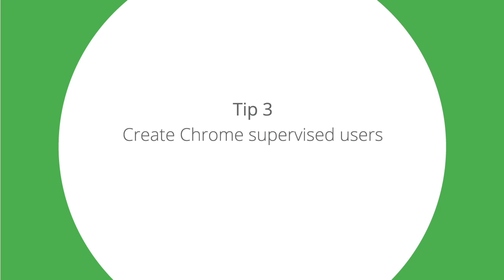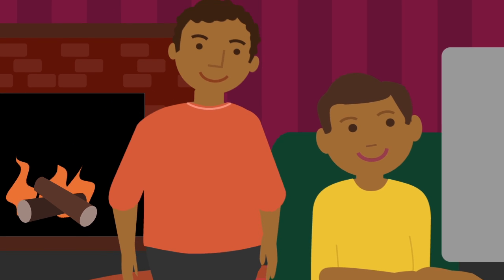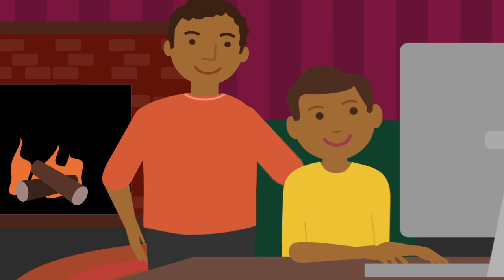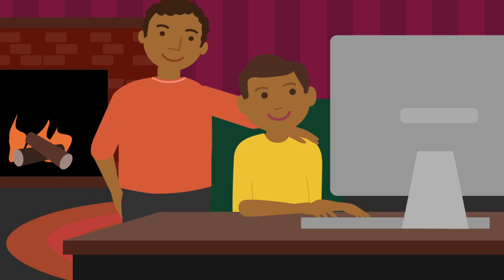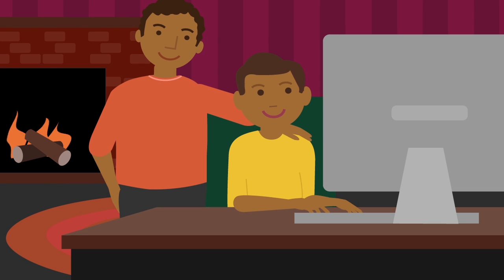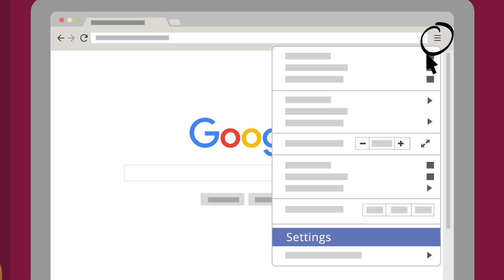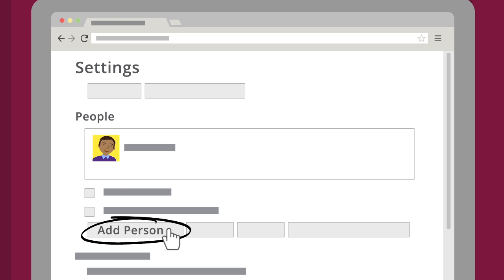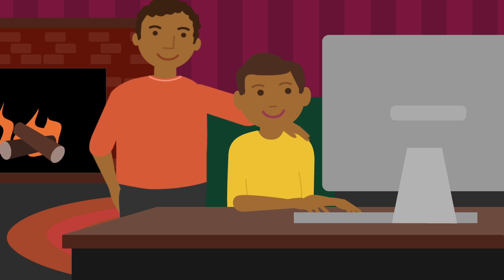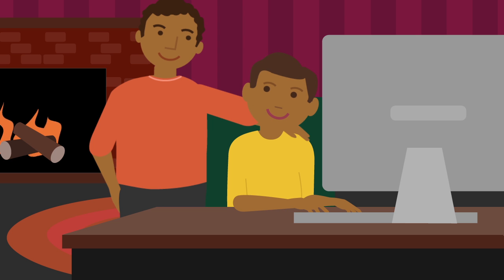Tip 3: Create Chrome Supervised Users. In your Chrome browser, you can create supervised user accounts to manage how your loved ones use the web. Simply log in to your Chrome account to add supervised users. Once created, you can allow or block websites, review visited websites, and more.